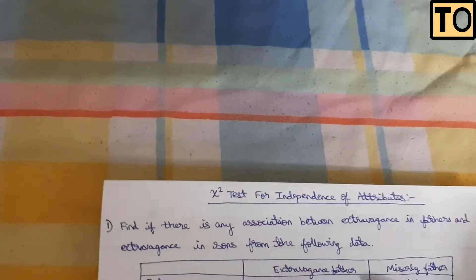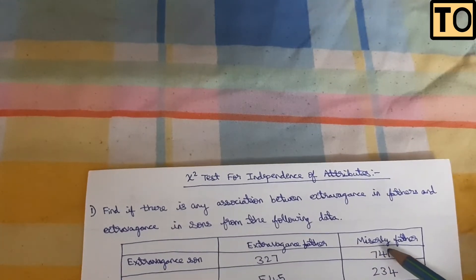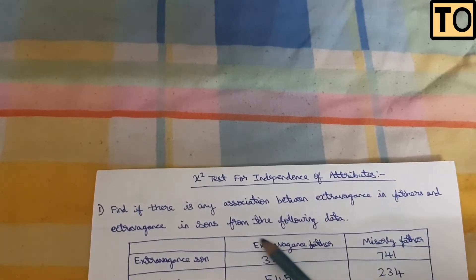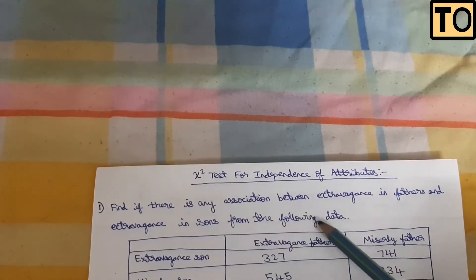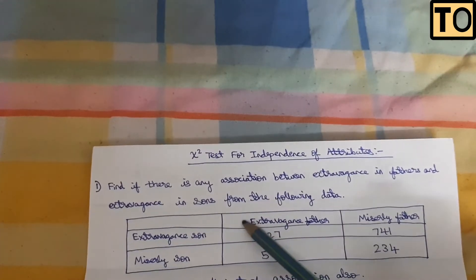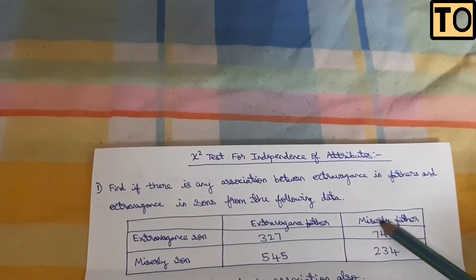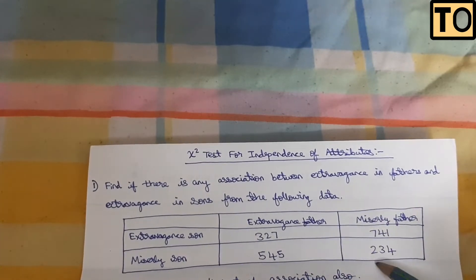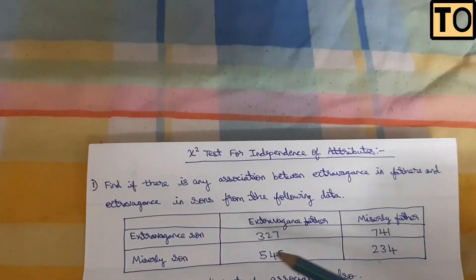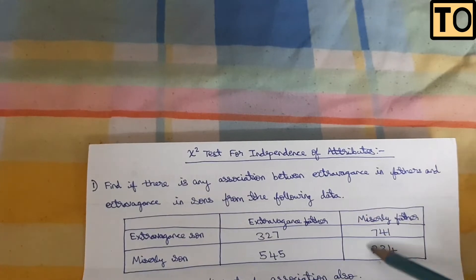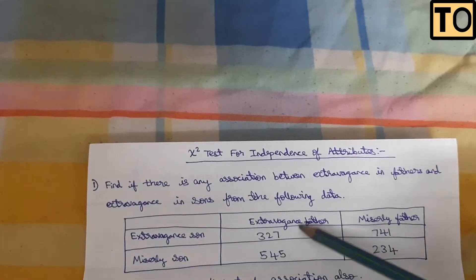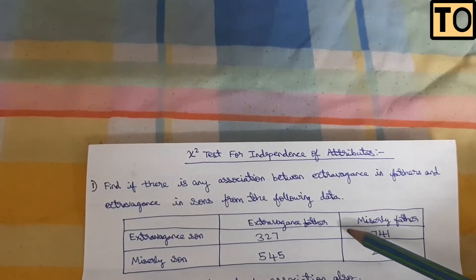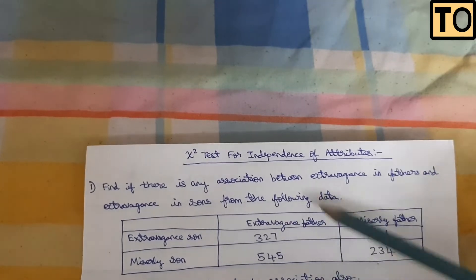Find if there is any association between extravagance in father and extravagance in son from the following data. You can see son, father, miserly father, and miserly son values. Now, we have a 2x2 matrix — that is 2 columns and 2 rows — with a total of 4 values.